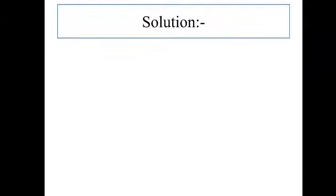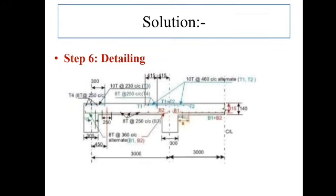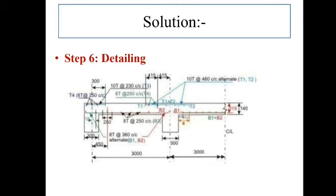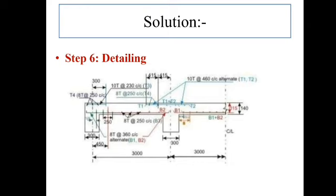Finally, let's show the reinforcement detailing of the design. Here B stands for bottom reinforcement and T1, T2, T3, T4 are for top reinforcement. At the support, support width is 300 mm, overall depth is 140 mm, effective depth is 115 mm. At the left support, T4 is 8 mm tor at 250 mm (distribution reinforcement at top side), and main longitudinal reinforcement is 10 mm tor at 230 mm center to center.